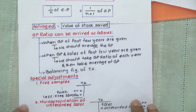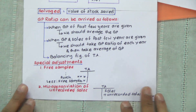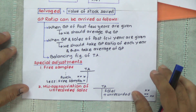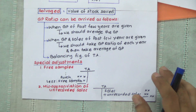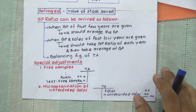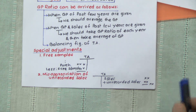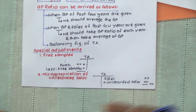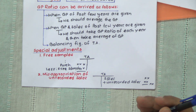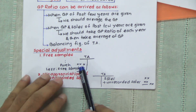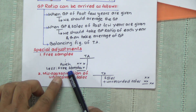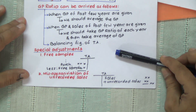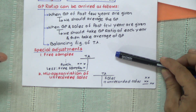Going further, there are certain special adjustments. Free samples are given by the company, usually when starting a new product line. The treatment in accounts is that in the trading account, free samples should be deducted from purchases, because that's the amount of stock available for sale. We have purchases of some amount, and free samples are given out at cost price — that's the reason why it is deducted from purchases and not from sales, since there's no element of profit involved.